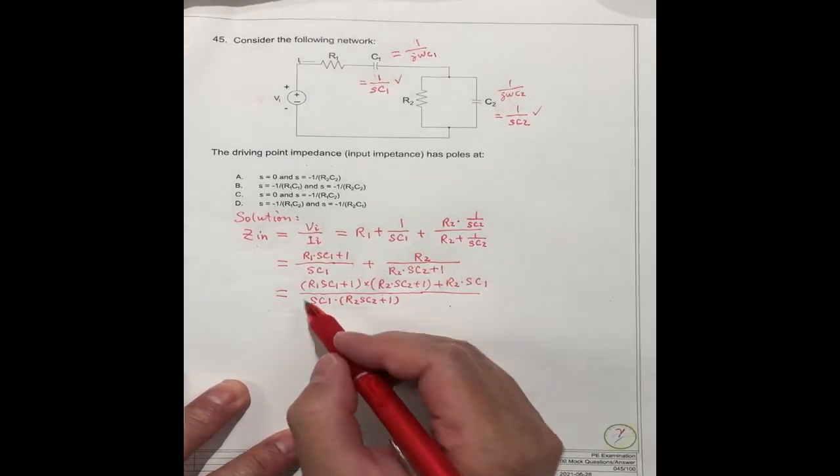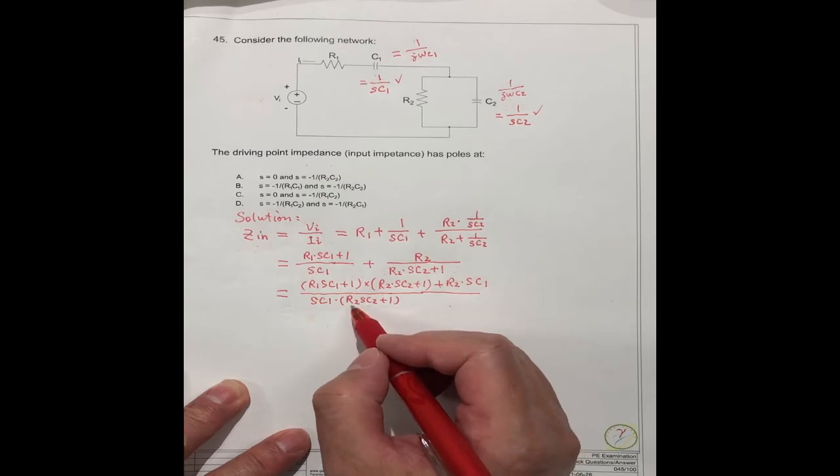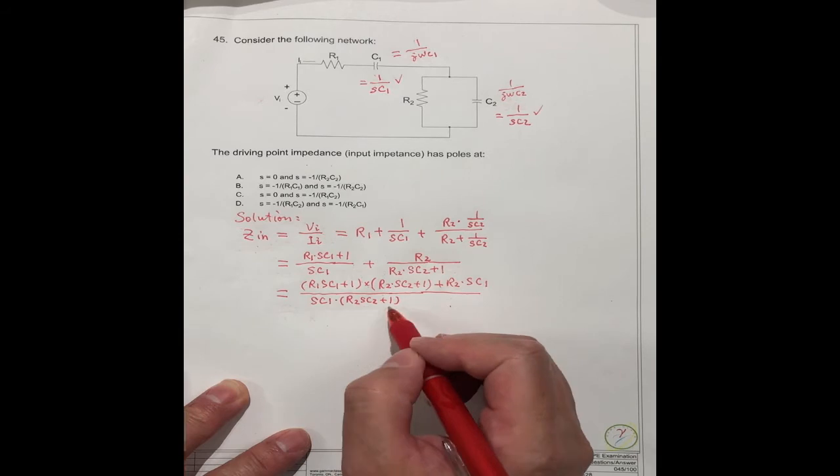Then you can find which one is the pole. So we have to separate the S. From here S, we should take the R2C2 out and divide this.